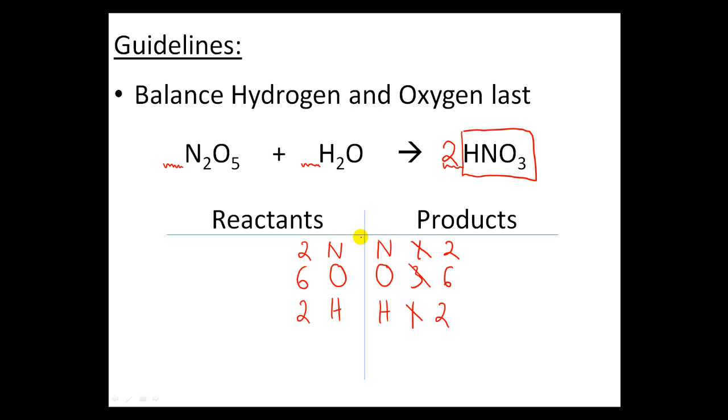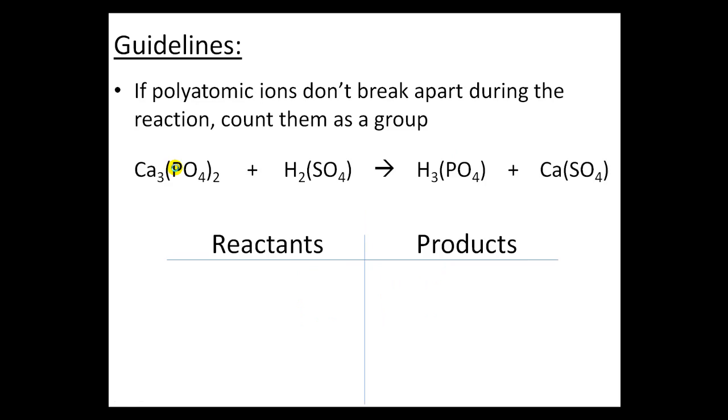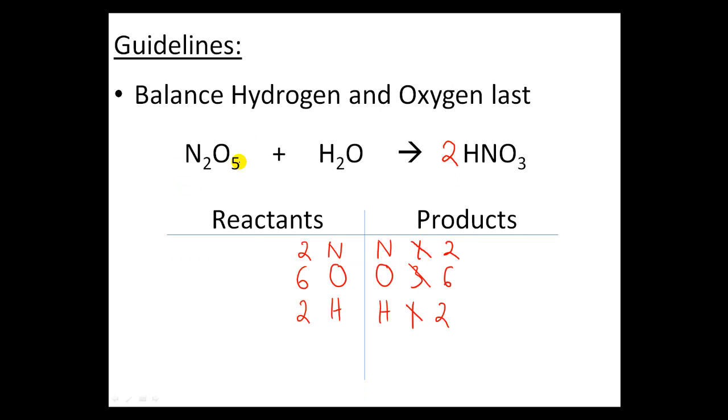And oh look at that, that was pretty easy to do. Everything's balanced. So my nitrogens are balanced - 2 and 2. My oxygens are balanced - 6 and 6. And my hydrogens are balanced - 2 and 2. So if I remove any of my rough work, my final answer should be right there. I don't need to put a 1 in the front because it's assumed that it's one compound over there anyway, and I have a 2HNO3.